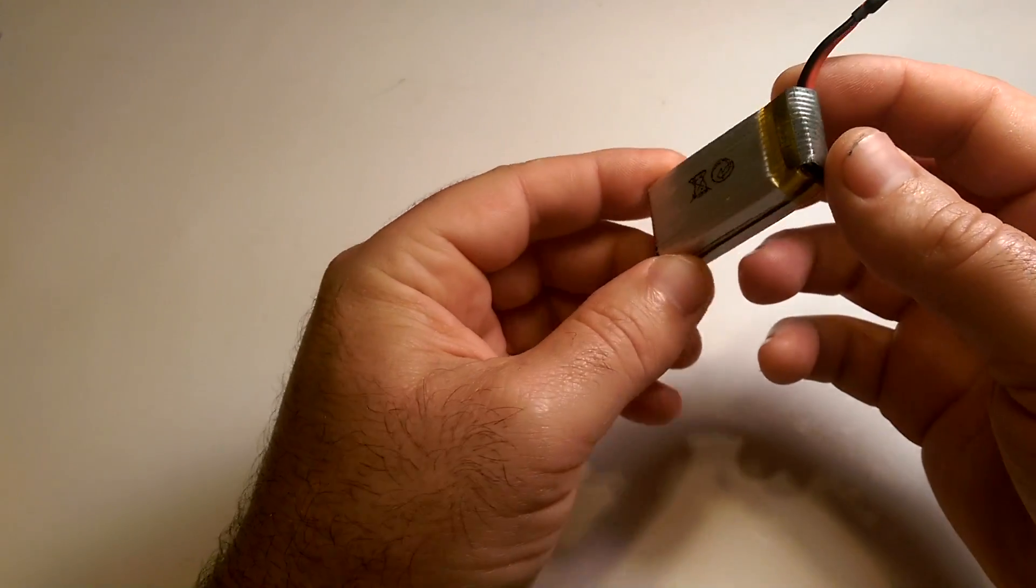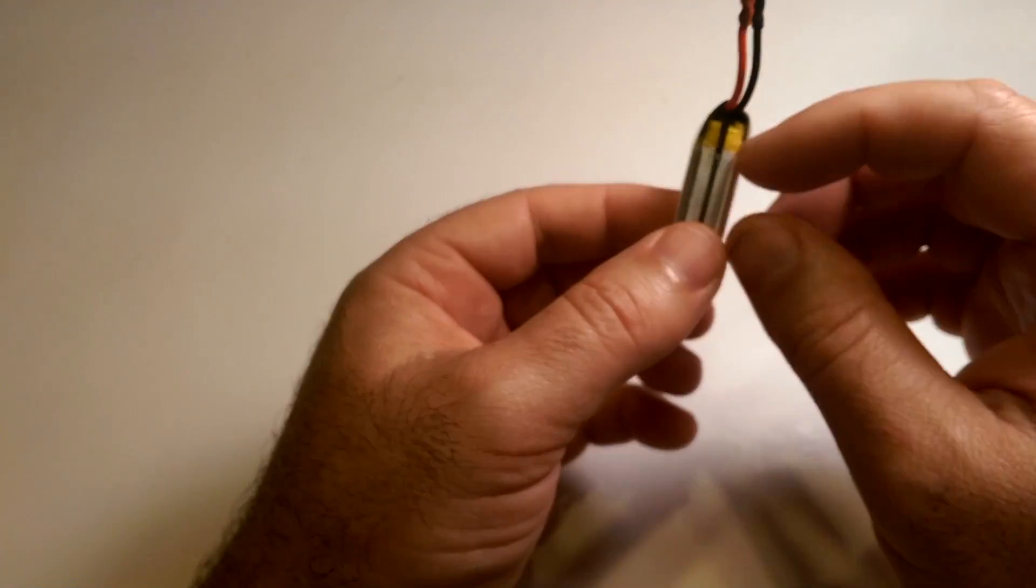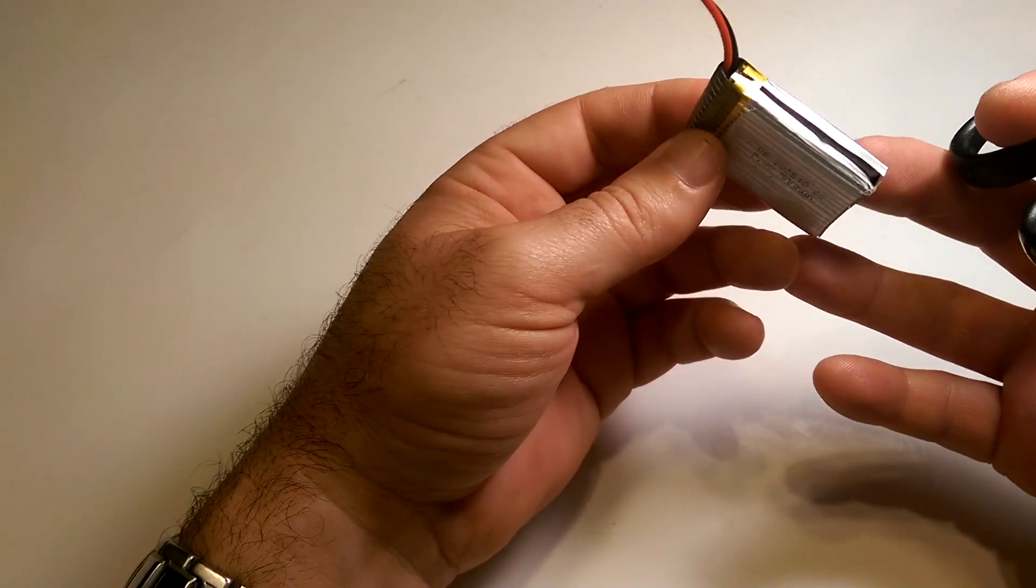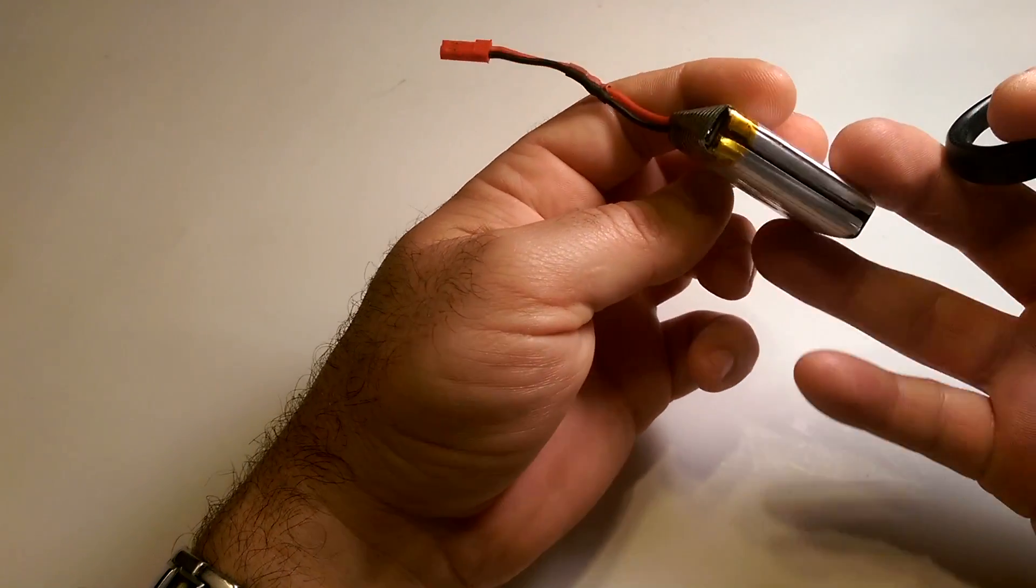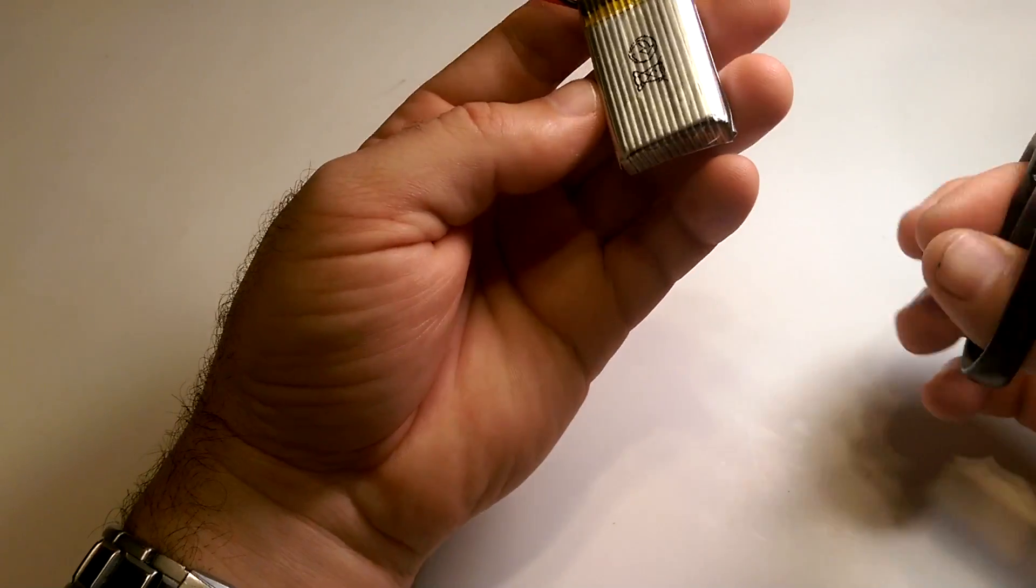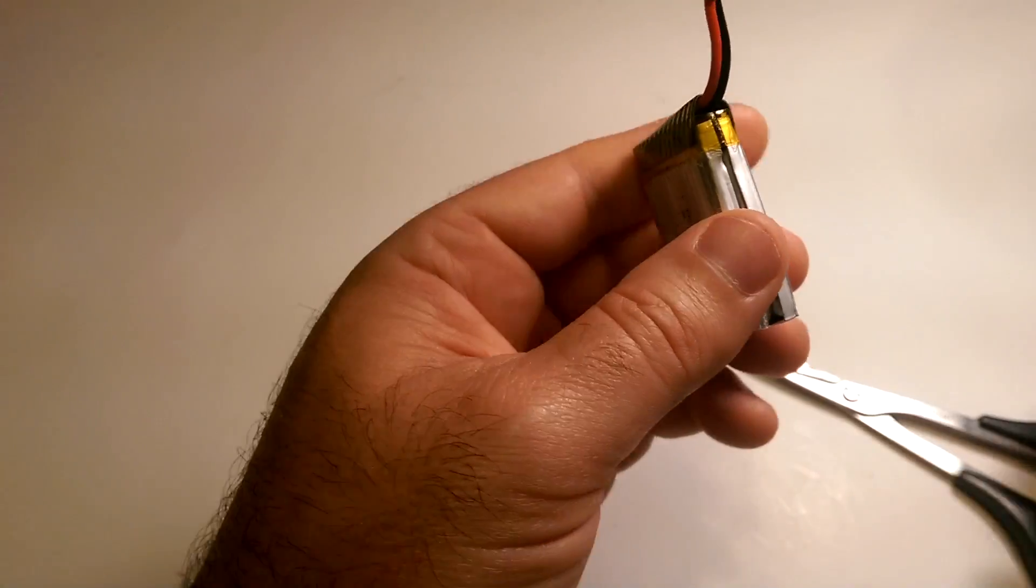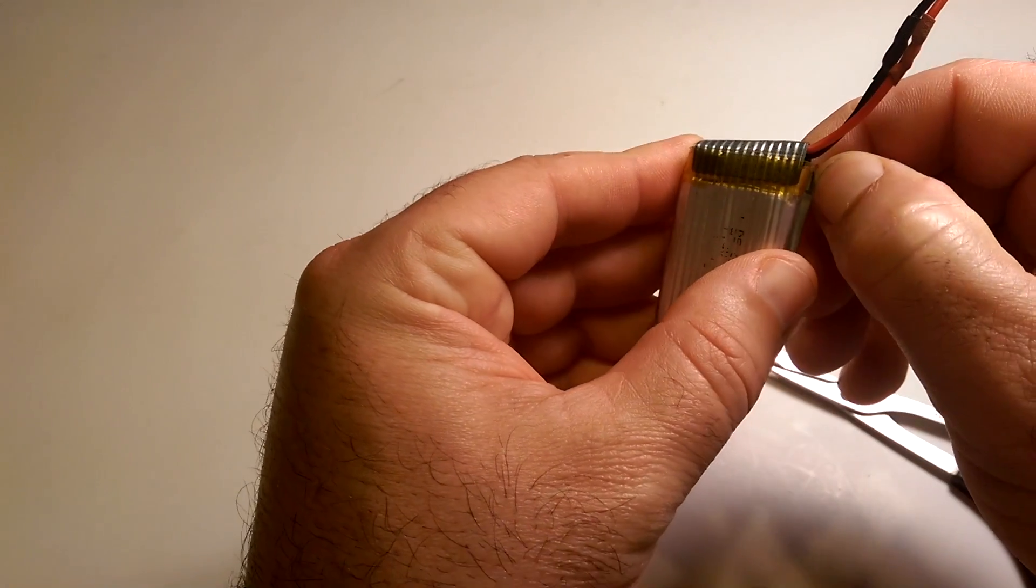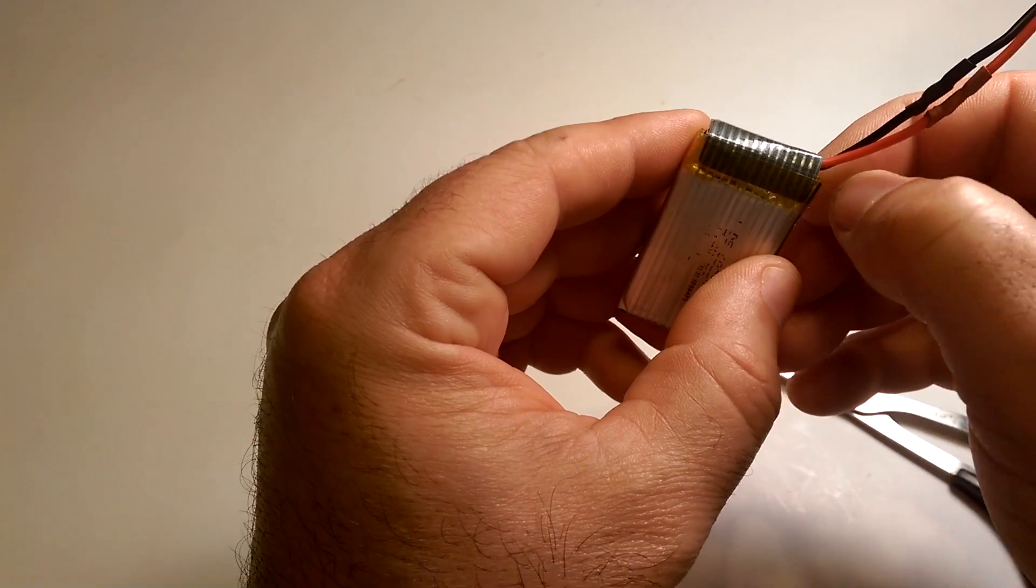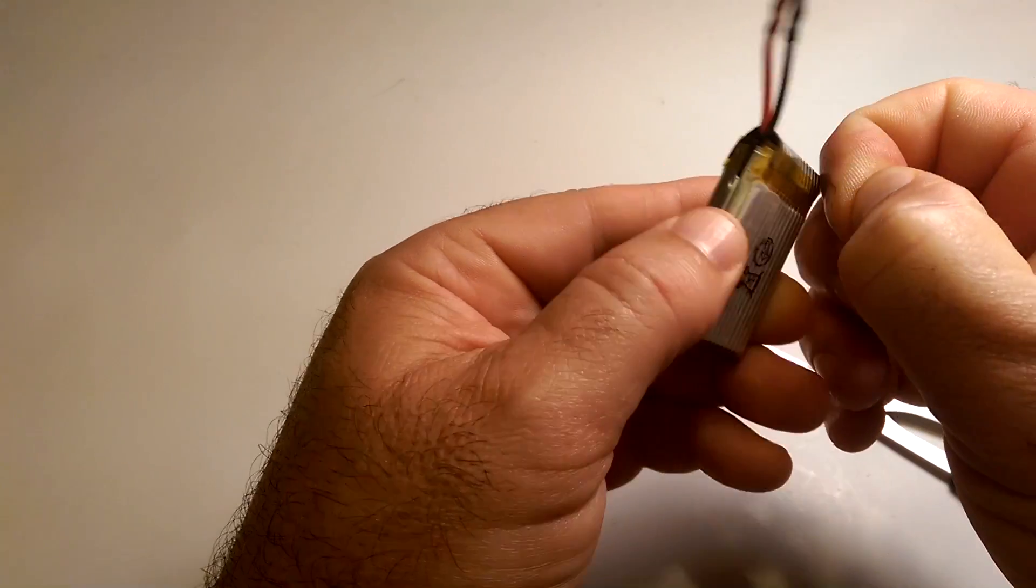And so far I figured out a way just to cut it open, bypass the chip. This is a 2 cell 7.4 volt lipo pack from a JJRC H8C quadcopter. You just want to be careful because this does have the potential to spark, blow up. So you're just going to want to be careful with this and do it at your own risk.